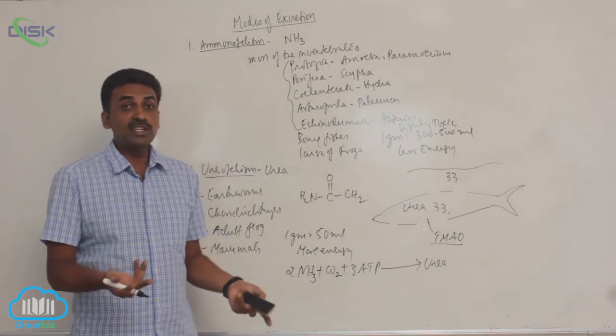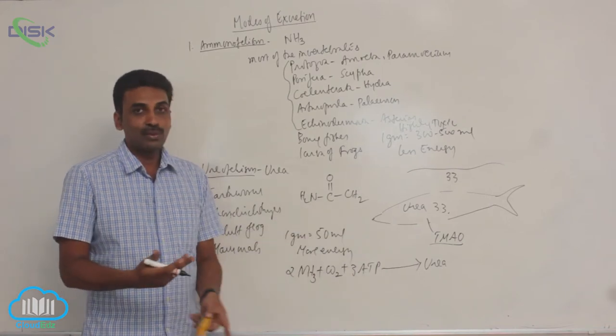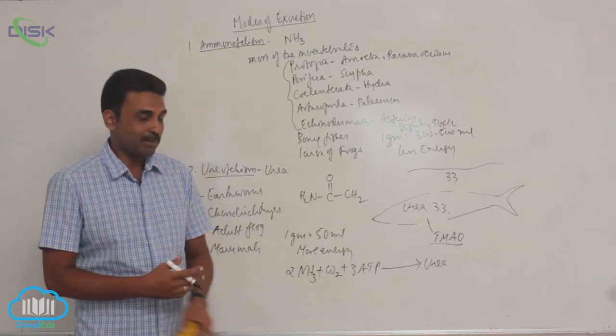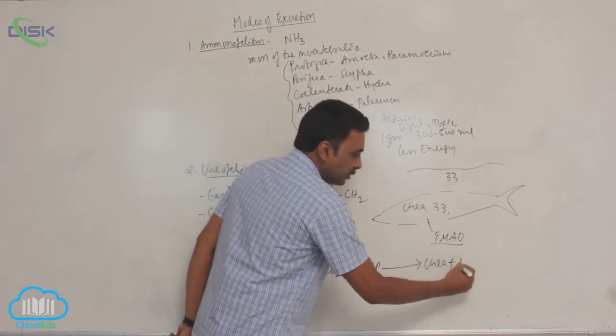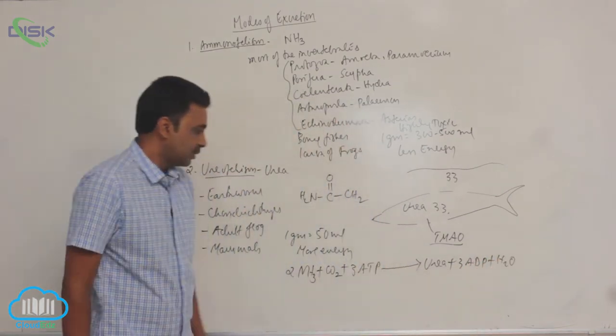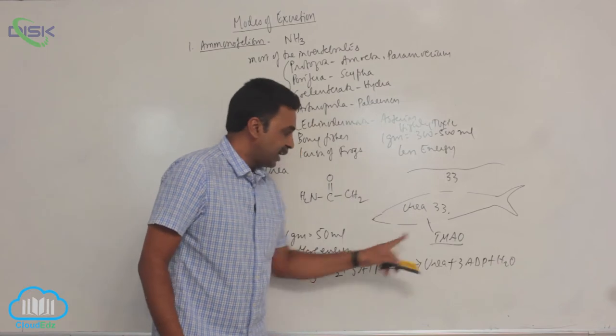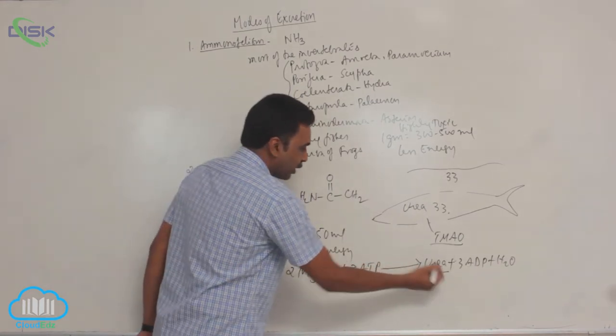When ammonia is produced, no energy is utilized in synthesis. But for urea, some energy is utilized. Three ATP molecules plus a molecule of water are broken down, and that energy is utilized to produce one urea molecule.